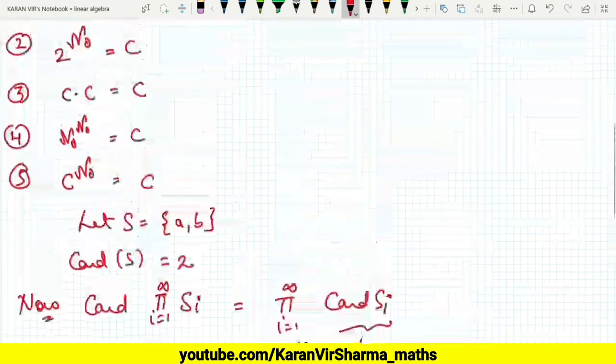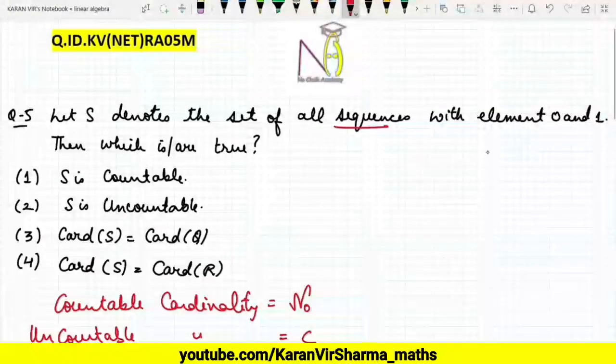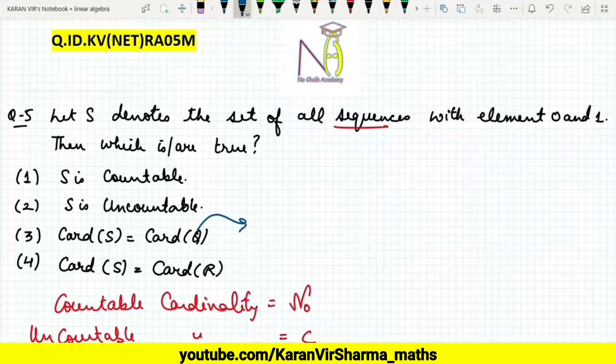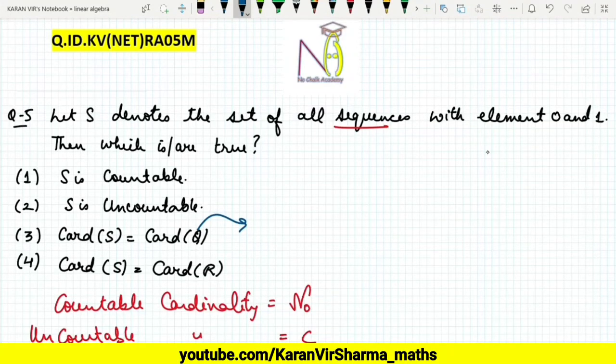Now we know that the cardinality of rationals, in the previous videos we have discussed, cardinality of rationals is aleph-naught. This is countable, so let it be aleph-naught. And reals is continuum. Clearly the third option is wrong, first is also wrong, second and fourth are correct.